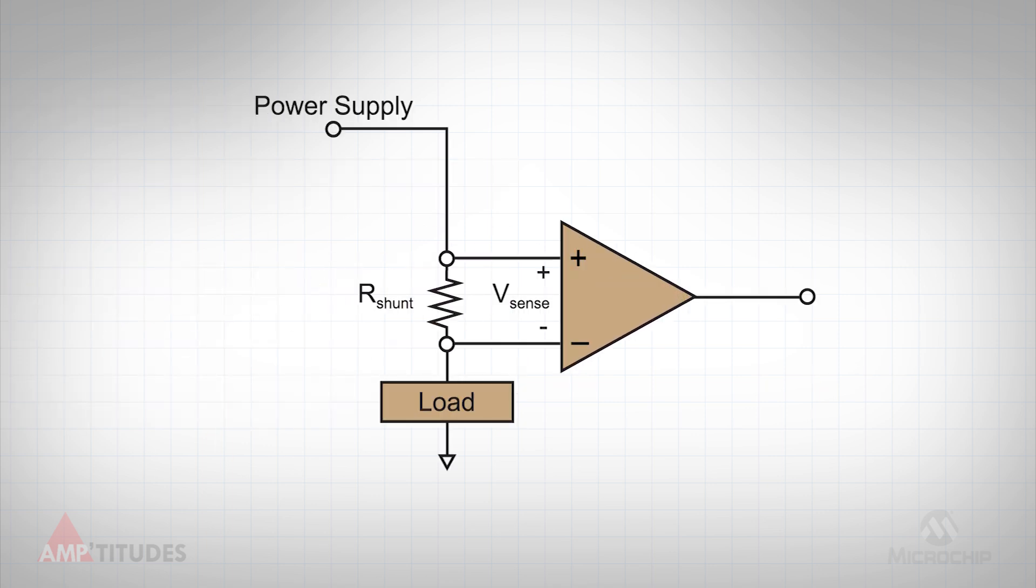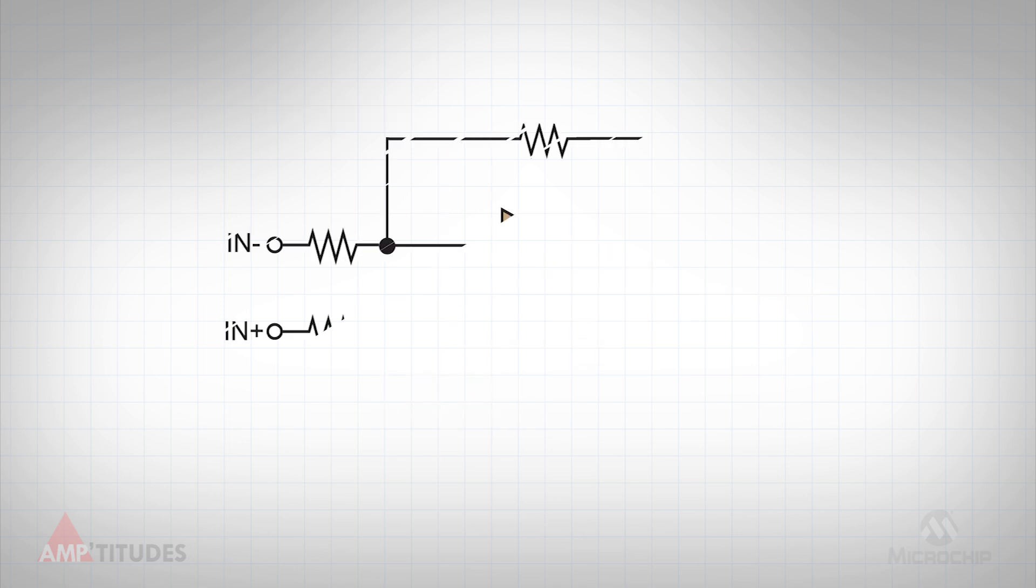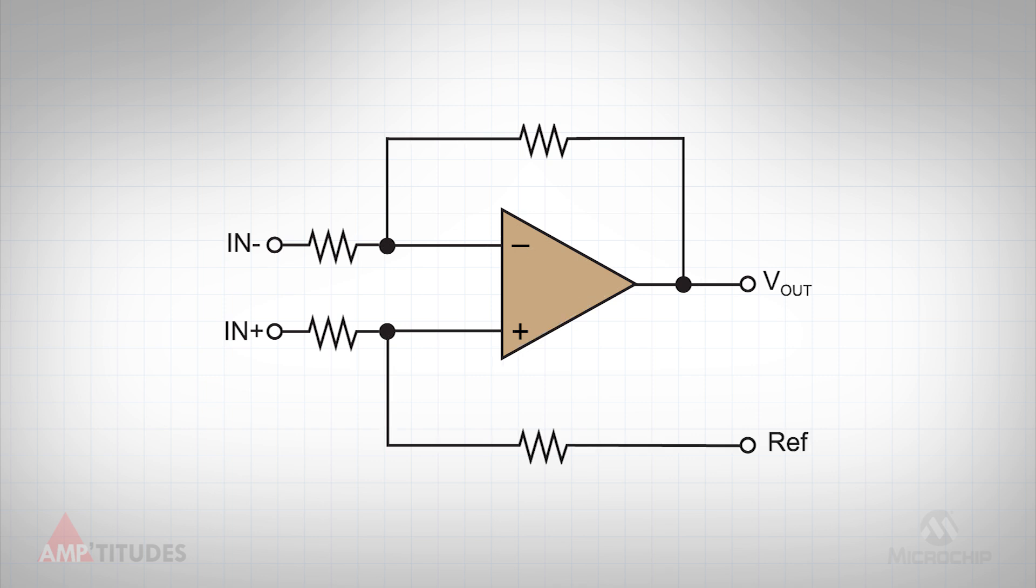For high-side current sensing, the amplifier must be able to support the higher common mode range, as well as handle any voltage transients that may occur on the power line. A system designer can use a standard operational amplifier configured as a difference amplifier, as shown here.